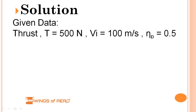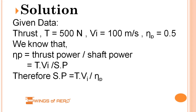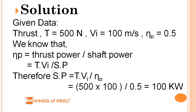Here is the given data: thrust produced is 500 N, flight speed is 100 m/s, and propulsive efficiency η_P is 0.5. We know that propulsive efficiency equals thrust power divided by shaft power. So shaft power SP equals thrust times velocity divided by η_P. Substituting: SP equals 500 N × 100 m/s divided by 0.5, giving 100 kW.